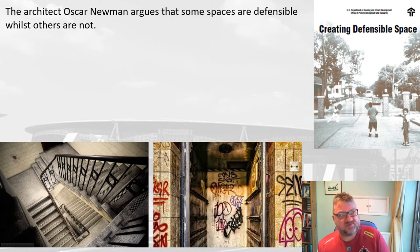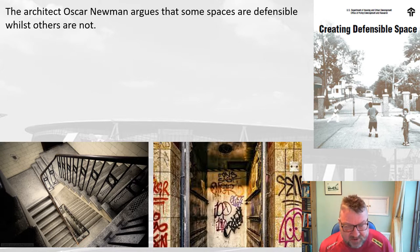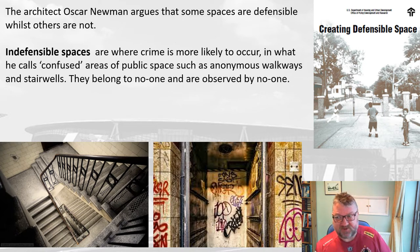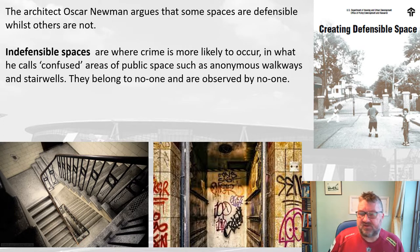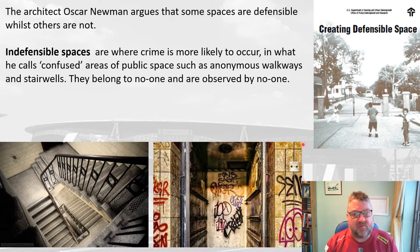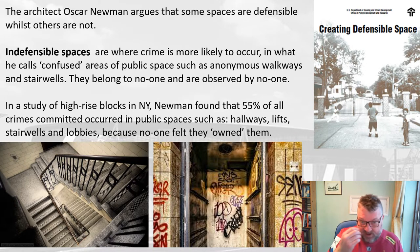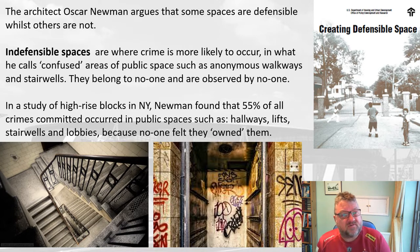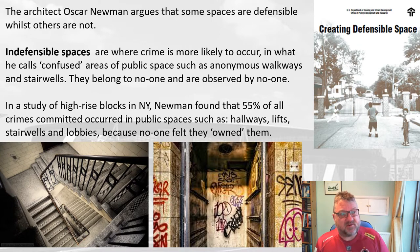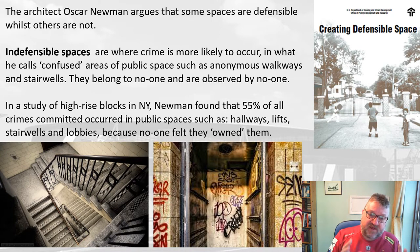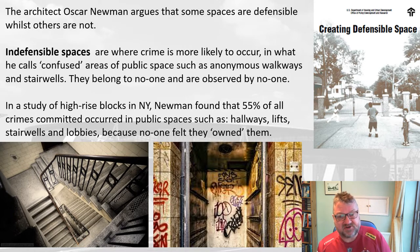The first real work done on this was by the architect Oscar Newman. He argued that you have spaces that are either defensible or indefensible. Indefensible spaces are where crime is more likely to occur — Newman calls these 'confused areas of public space.' Examples include anonymous walkways and stairwells that belong to no one and are observed by no one. Newman did a study of high-rise blocks in New York and found that 55% of all crimes were committed in public spaces such as hallways, lifts, stairwells and lobbies, because no one felt they owned those areas.